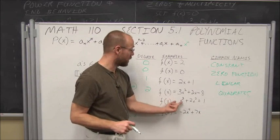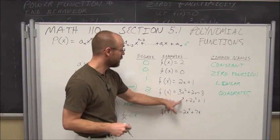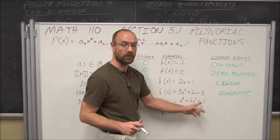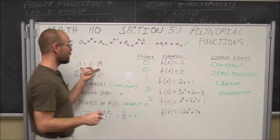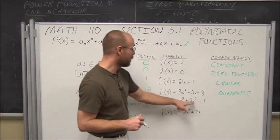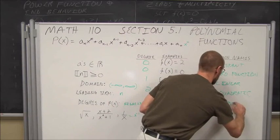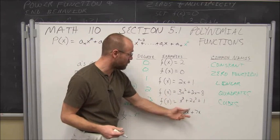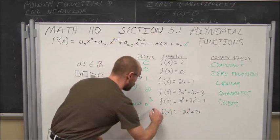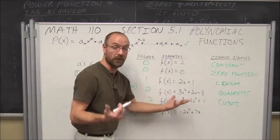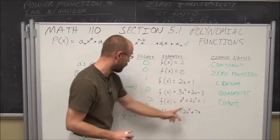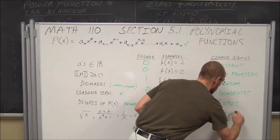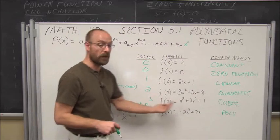If we look at the next one, it's a third degree polynomial — the highest power is 3 — written in descending order. Notice there's no x to the first power, but its coefficient just happens to be 0. We call this a cubic function. Finally, if the degree is 4 or higher, we generally just group them together and call them polynomials — meaning 'many numbers.'